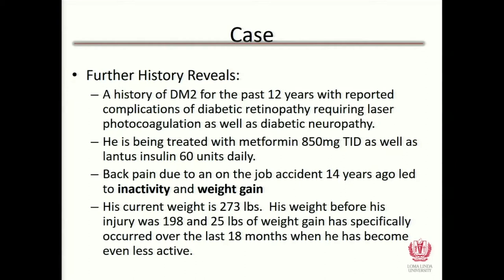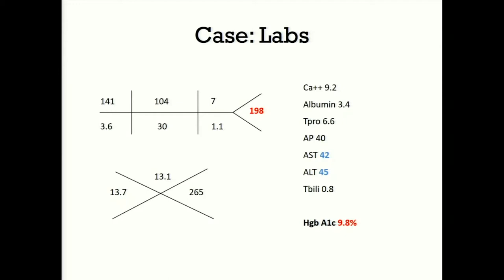Further history: he's had diabetes for about 12 years, with complications including retinopathy requiring laser photocoagulation and diabetic neuropathy. He's being treated with metformin 850 mg TID and Lantus 60 units daily. He's had back pain due to a job accident 14 years ago, has been inactive, and has progressively gained weight. He currently weighs 273 pounds — up from 198 pounds before his injury — with significant weight gain over the last 18 months.